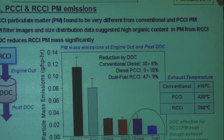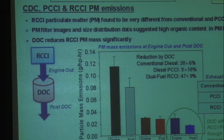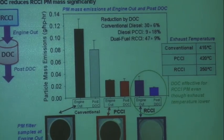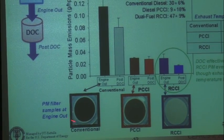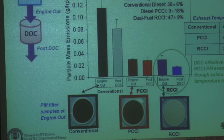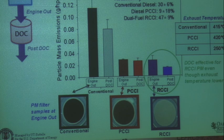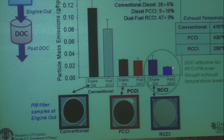RCCI particulate matter was found to be very different than conventional diesel particulate matter. These pictures show what you capture on a filter — for conventional diesel, very black smoke collected on the filter. Some of that is also reduced in the DOC, which indicates both elemental and organic constituents in the particulates. The DOC can oxidize some of the organic components. For RCCI, the DOC is also able to reduce particulate matter emissions somewhat, even with much lower exhaust temperatures.